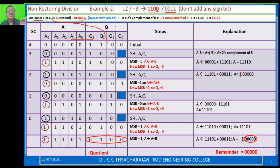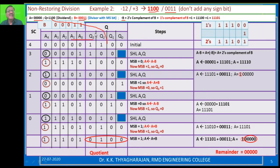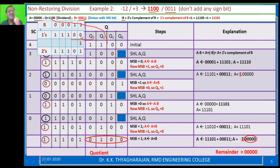Since we have to do A minus B in the steps, it is better to find minus B as I already told. Minus B is the 2's complement of B. To find the 2's complement, first take the B value: 00011. Take 1's complement, then add 1. The 2's complement result is 11101. I have put that value — 11101 — here. If you need B, use the original value; if you need minus B, use this 2's complement value.